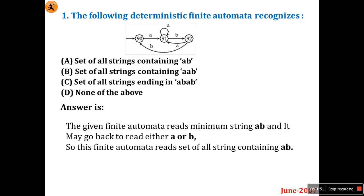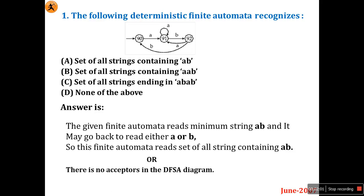Option A (set of all strings containing 'ab') could be correct, but since there is no final state shown in the DFA diagram, 'none of the above' (option D) may also apply. I've explained both. In an examination, better select A instead of D, as this is likely a printing mistake — Q2 is probably the final state. I'll leave it to you, but according to me, option A is the right answer.